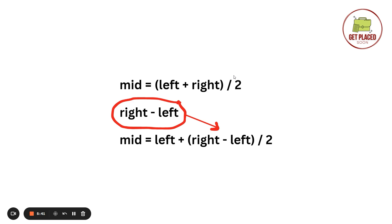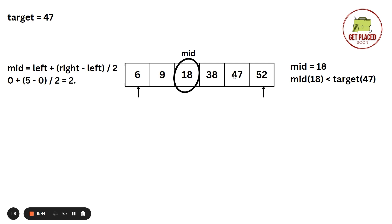Let's take an example and see how binary search works on a sorted array. We have six elements and the target is 47. We set left to the first element index 0 and right to the last element index 5 (n minus 1, because array indexing starts from zero). The first step is calculating the middle: left + (right - left) / 2 = 0 + (5 - 0) / 2 = 2. So the mid index is 2, which holds the value 18.